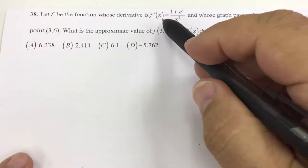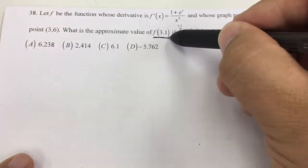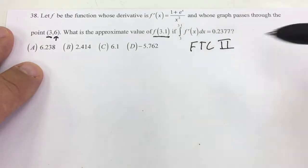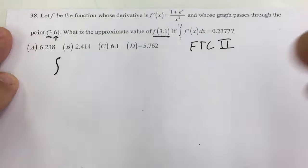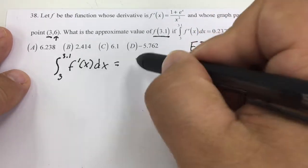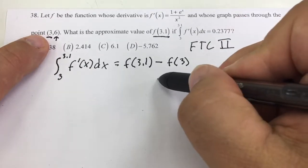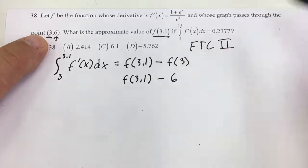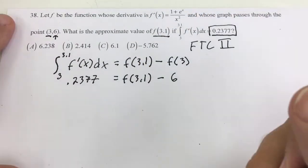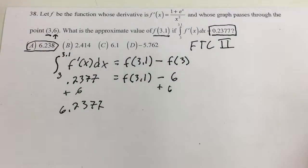Choice C. It gives me a derivative and says that this derivative from 3 to 3.1 is actually 2.377 — they already calculated that for me. They want to know what f(3.1) is. I see that f(3) equals 6. So I'm going to use FTC Part 2: the integral from 3 to 3.1 of f'(x) dx equals f(3.1) minus f(3). That's f(3.1) minus 6. It equals 0.2377, so f(3.1) equals 6.2377, which rounds to 6.238.